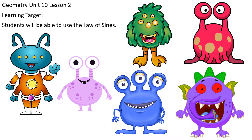Hey, look who's back — our six funny little aliens. So we're probably going to be working with triangles that have six pieces again: three angles and three sides. But in the previous lesson, every time we had a triangle we were so lucky it had a 90-degree angle, so we could use the Pythagorean theorem and SOHCAHTOA. Well, what if we're not so lucky? So here comes, ready or not — the Law of Sines.